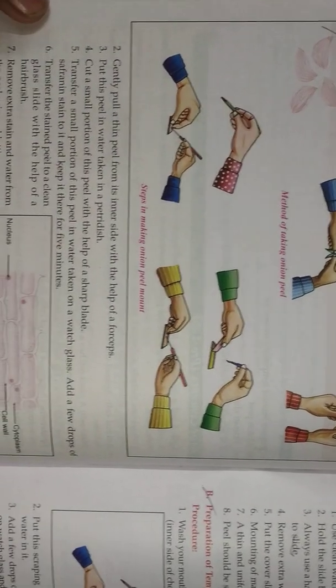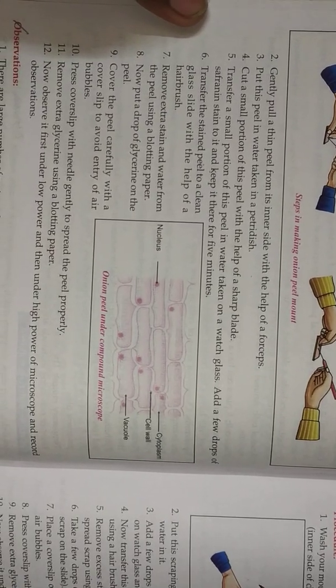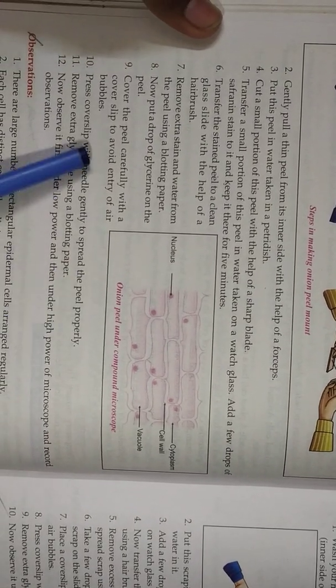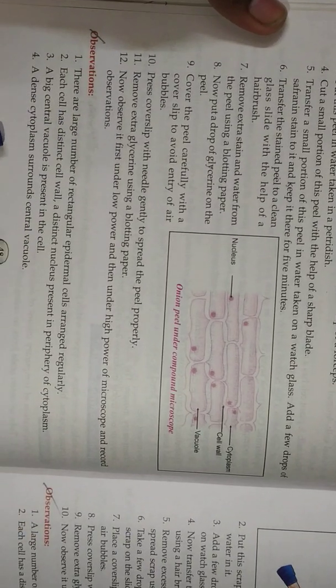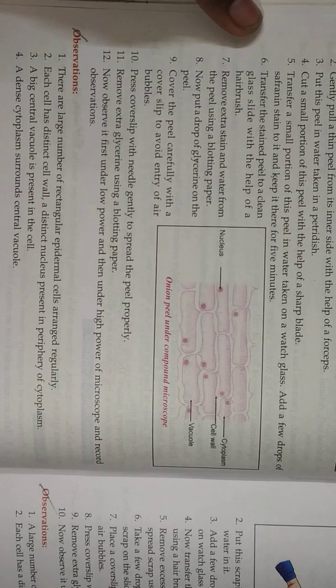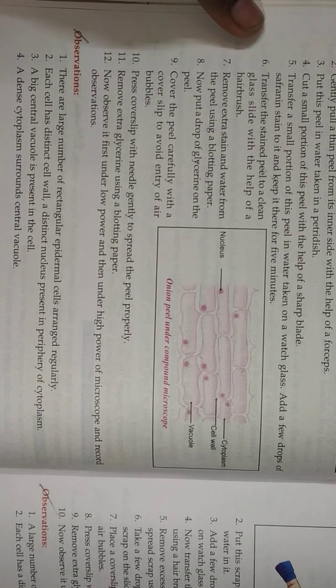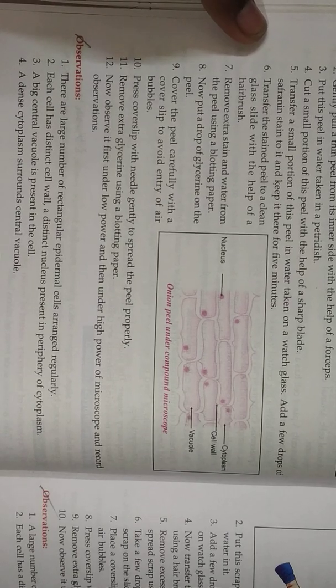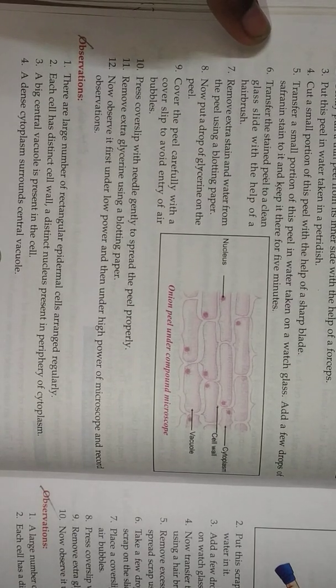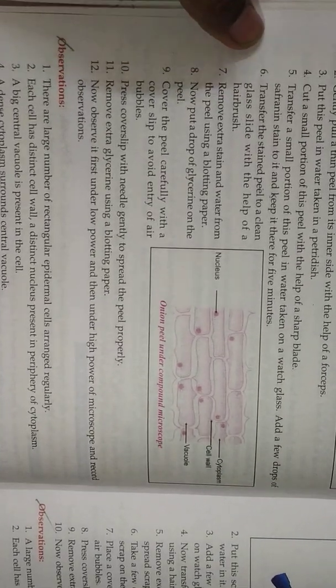Method of taking onion peel and then onion peel under microscope. And then you see observations: large number of rectangular epidermal cells arranged irregularly, each cell was distinct. Cell wall, distinct nucleus present in the cytoplasm. A big central vacuole present in the cell surrounding the central vacuole. And then next page.